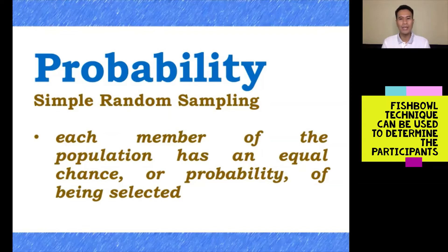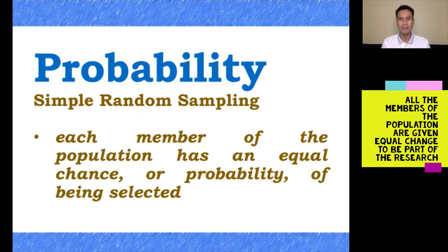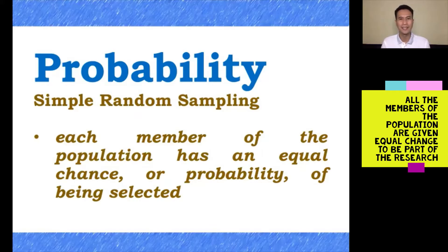Based on the right size and right members, in determining the right size we can make use of Slovin's formula. Another example is to put the names of the students in a hat, or members of the population will be given numbers and labeled. Then you pick one at a time until you reach the desired number of participants. For example, if you have 40 students, you put all their names and pick one at a time until you reach your desired number.